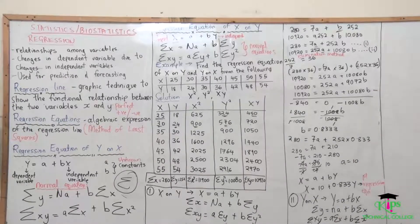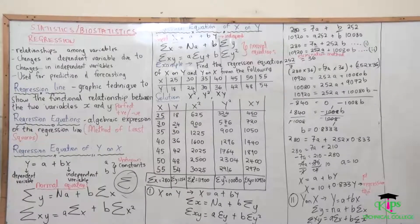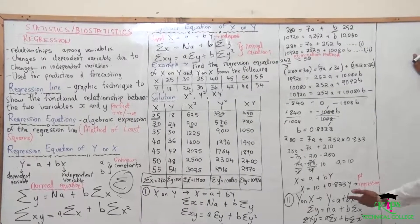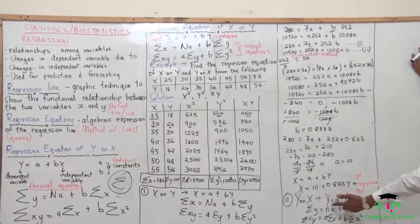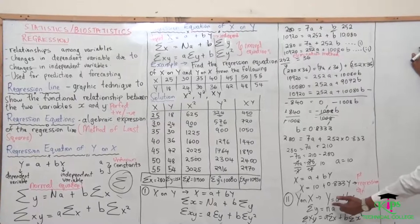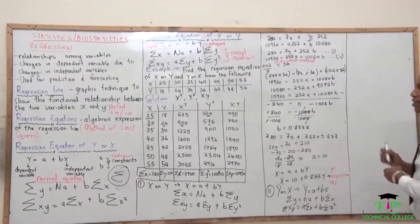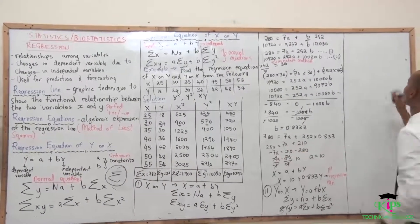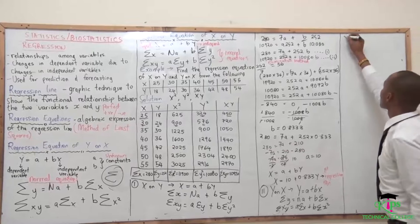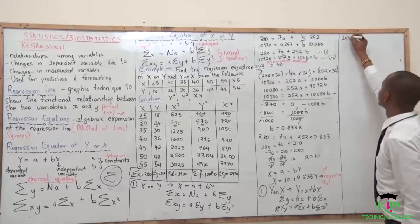A friend of mine used to call these sigmas, but instead of using sigma, let's just use the word summation to make things easier. So let's substitute the values we have. The summation of y — we already have it from our question — it's 252.